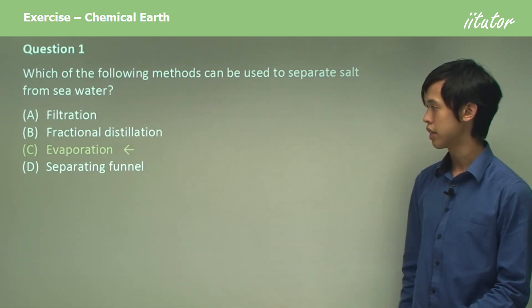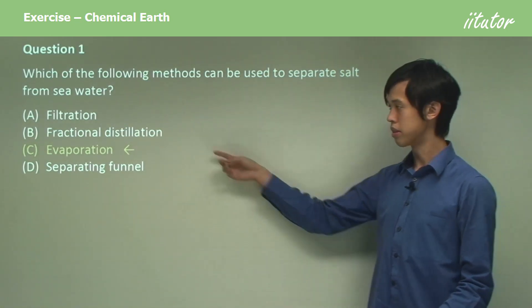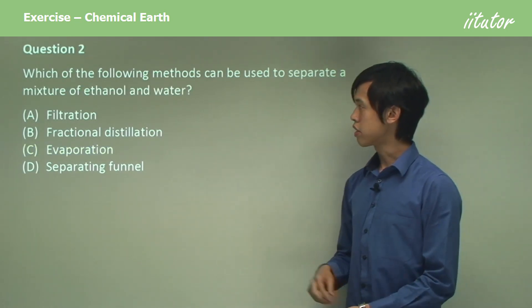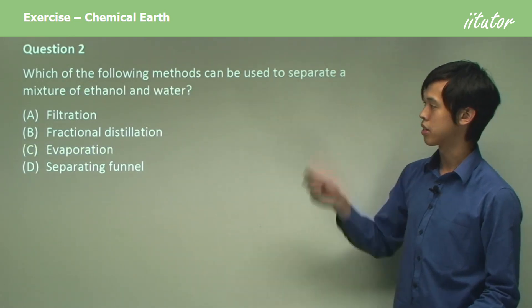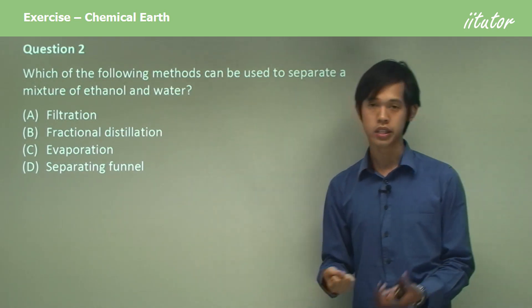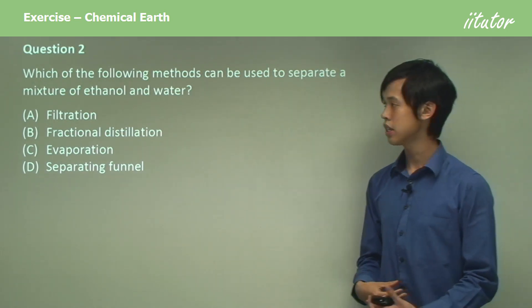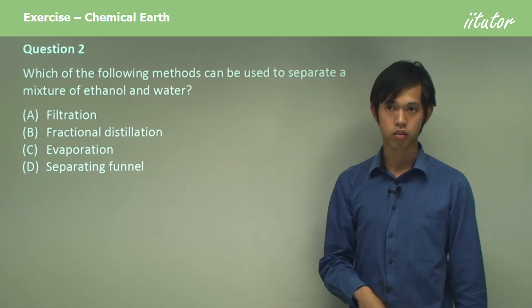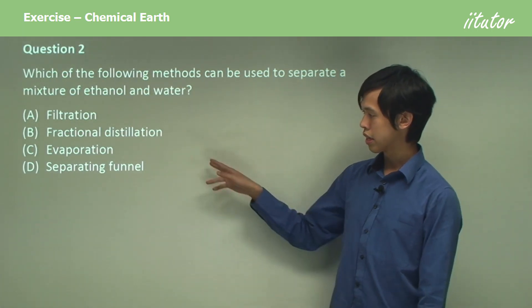Even though fractional distillation could work, we probably wouldn't use it. So which of the following methods can be used to separate a mixture of ethanol and water? These are two liquids dissolved into one another, so obviously A and D are off the charts.